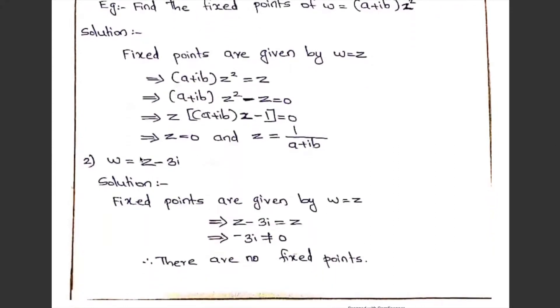Next: find the fixed points of w equal to z minus 3i. Setting z minus 3i equal to z, z cancels, which implies minus 3i equal to 0. Since minus 3i is not equal to 0, there are no fixed points for the mapping w equal to z minus 3i.